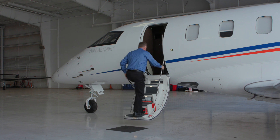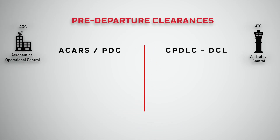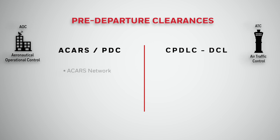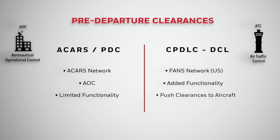Datalink services can be used to obtain pre-departure IFR clearances. There are two types of Datalink Departure Clearances. One, the traditional ACARS Pre-Departure Clearance, or PDC, uses the ACARS network and AOC ground stations to send Datalink clearances to the aircraft. PDCs are limited in functionality and cannot be pushed to the aircraft or automatically loaded into the FMS. Two, the newer CPDLC DCL uses the FANS network in the US to send clearances to the aircraft. DCL has added functionality and can be used to automatically push clearances, including amended clearances, to the aircraft.